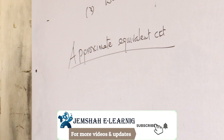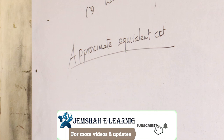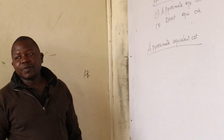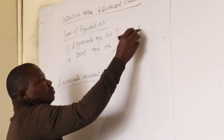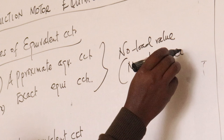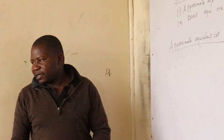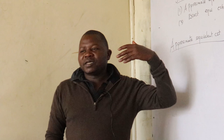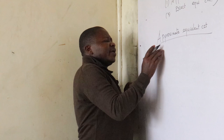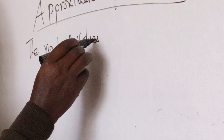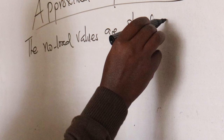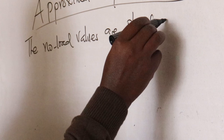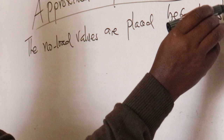What are we talking about in approximate, and what is the difference? All of them look the same. The difference is how we place what you call the no-load value — the magnetizing circuit. This is the circuit that primarily develops the first magnetic flux. The way we place this value determines whether it is exact or approximate. In approximate, the no-load values are placed before the stator and rotor values.